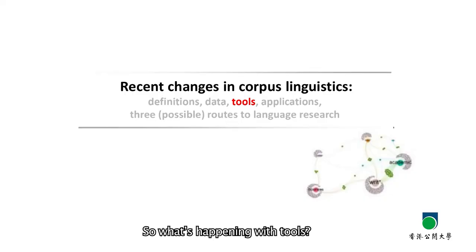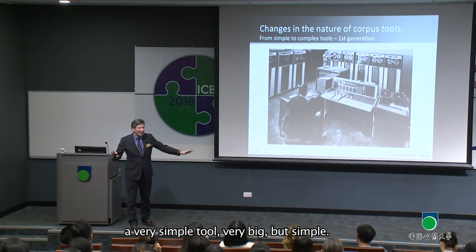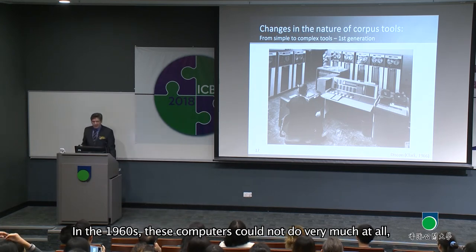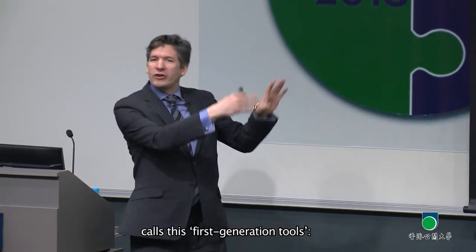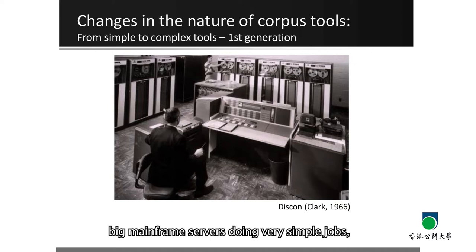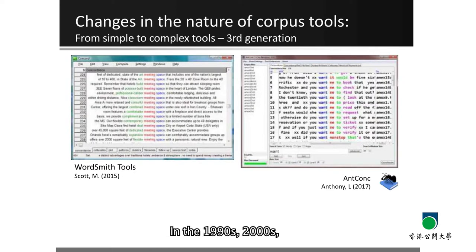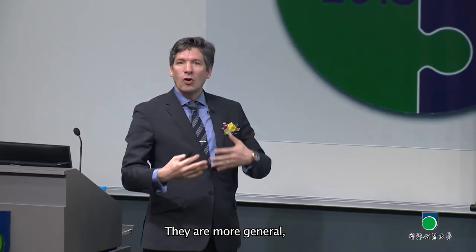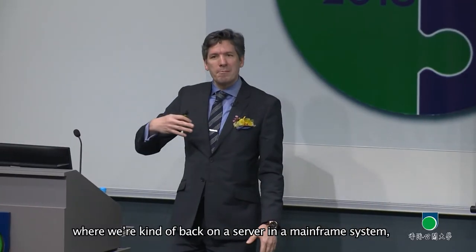So let's go to tools. What's happening with tools? Back in the 1960s, the tools were very simple but very big. McEnery and Hardie in their book on corpus linguistics called these first-generation tools — big mainframe servers doing very simple jobs, counting words and so on. In the 70s and 80s, we had second-generation tools like MicroConcord, the first kind of PC-based simple corpus tool. In the 1990s and 2000s, we get tools like WordSmith Tools and AntConc. They're more general, they work with different systems, and they have lots of functionality.